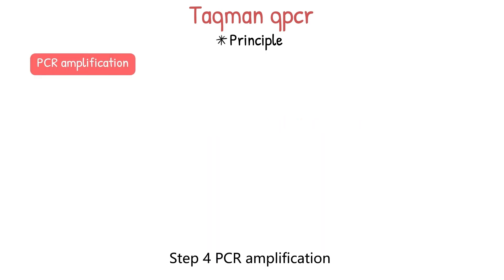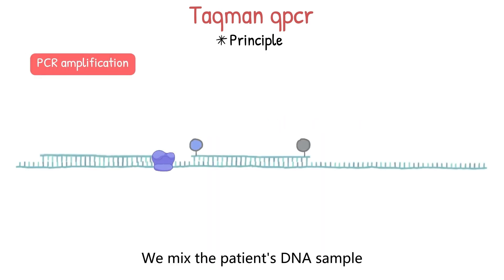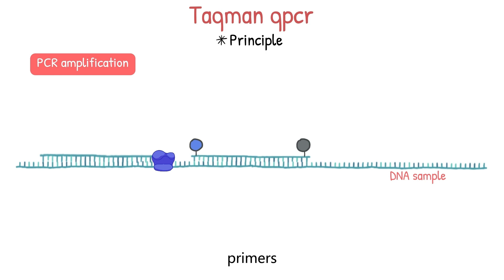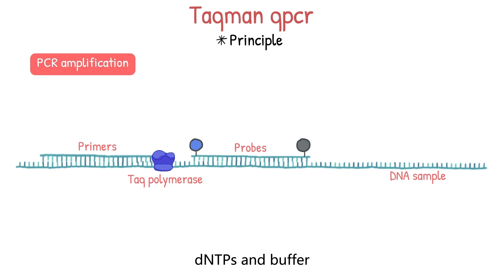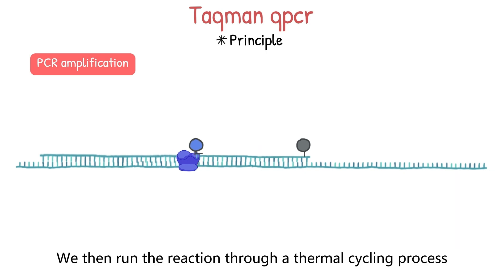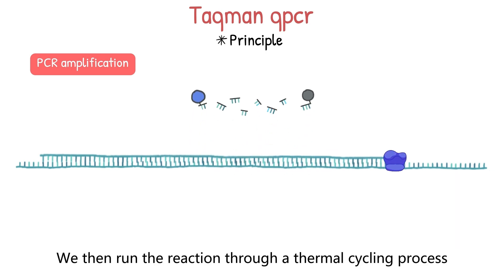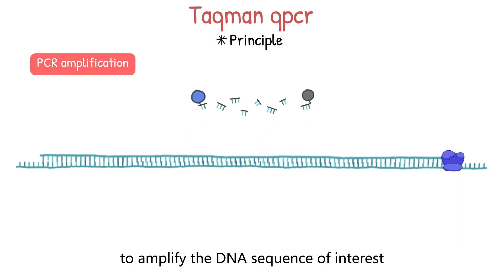Step 4 is PCR amplification. We mix the patient's DNA sample, primers, and probe with other components like Taq polymerase, dNTPs, and buffer. We then run the reaction through a thermal cycling process to amplify the DNA sequence of interest.